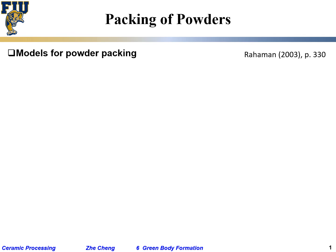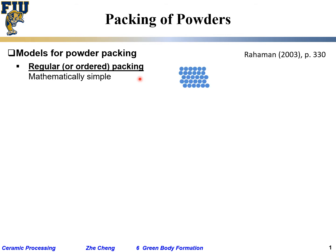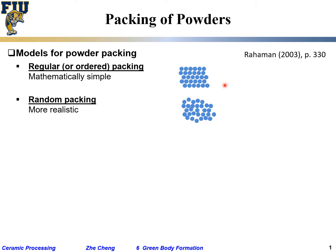Let's talk about the packing of powders. For powder packing, there will be so-called regular or ordered packing, which is when you treat them very mathematically — they follow certain patterns: simple cubic, FCC, or HCP. There will also be more random packing, which is more realistic. It doesn't have long-range order — think of it like a crystalline material versus an amorphous material in terms of atom packing, but with actual hard powder particles packed in a similar fashion.